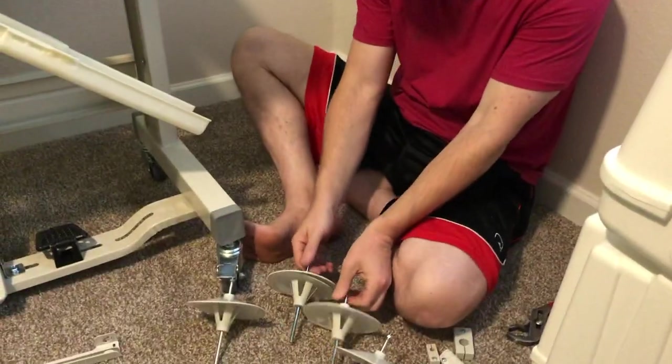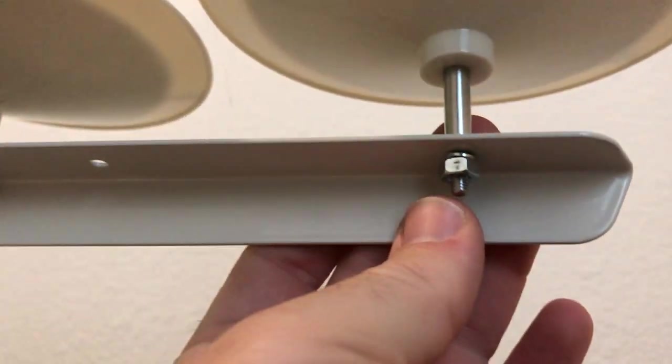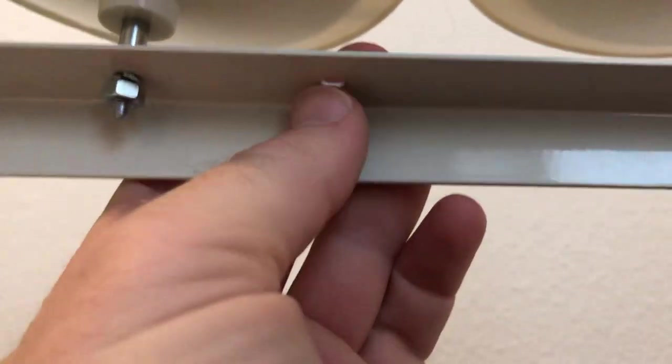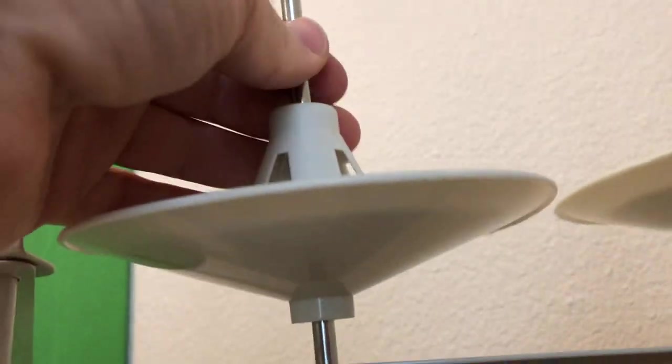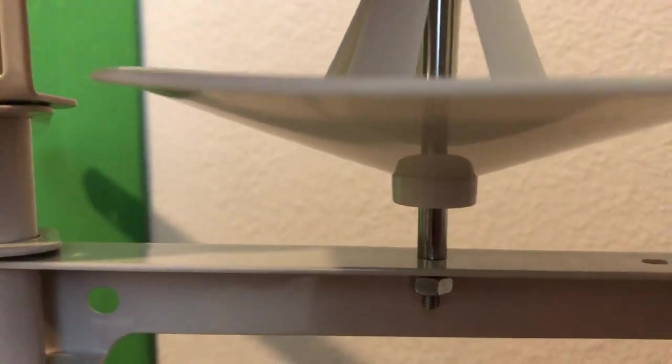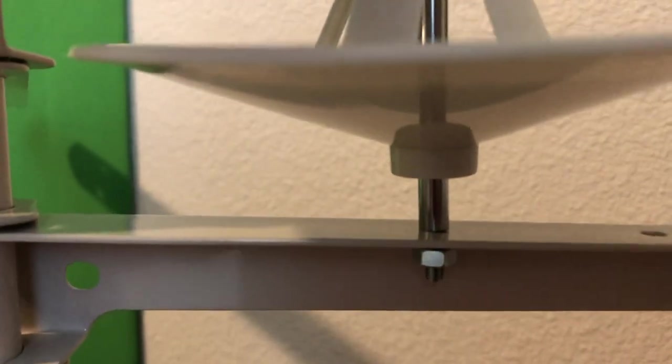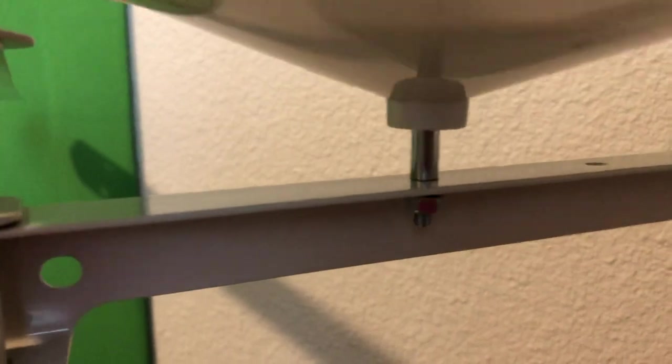So just do all four of them like this or three or however many you bought. Okay, all four done. Now let's go ahead and mount them onto the brackets. Okay, something I wanted to point out to you guys is these holes at the top of the bracket are somewhat of an oval shape.